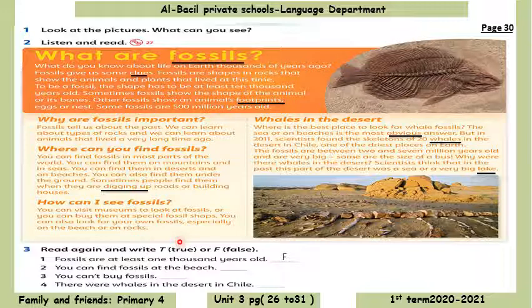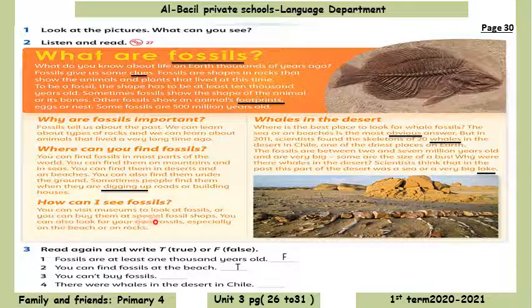Right or wrong? True or false? It's true — on a beach, in the sea, in a desert. Number 3: You can't buy fossils. No — it's false. You can buy them at special fossil shops.